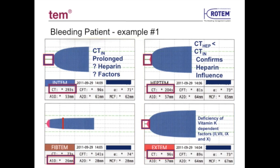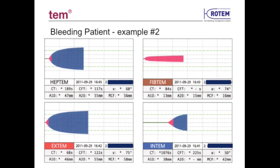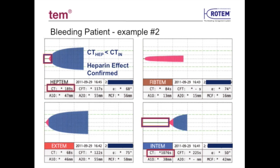Looking at the A10 value of FibTem, there is a very strong fibrin contribution to clot firmness — the A10 is 26 mm, already above the upper end of the normal range. In another post-operative cardiac surgery bleeding example, a significant prolongation of CT in Intem is seen. A corrected CT in Heptem confirms heparin effect, and additional heparin reversal is indicated. The A10 of FibTem demonstrates good amplitude of 13 mm, and A10 parameters in both Heptem and Extem — 47 and 46 mm respectively — also demonstrate overall good clot firmness.